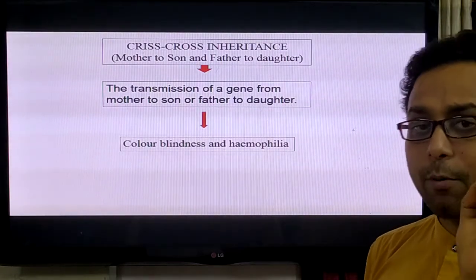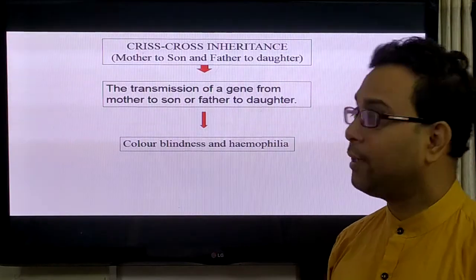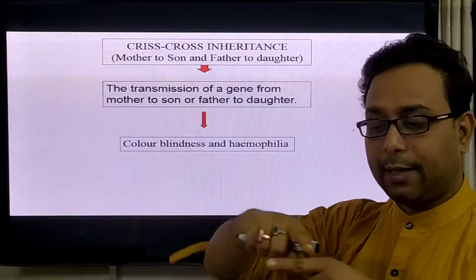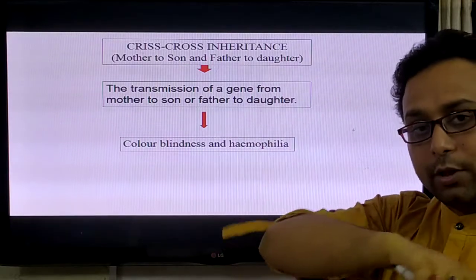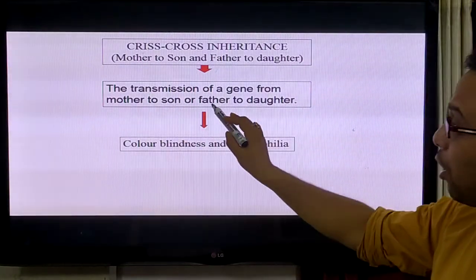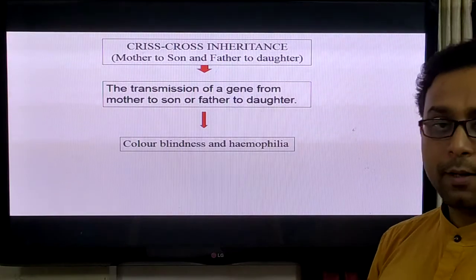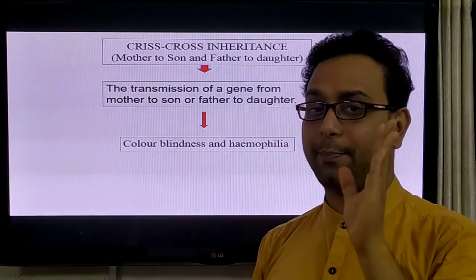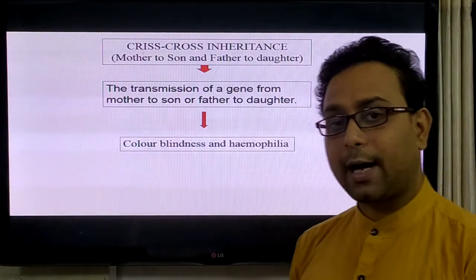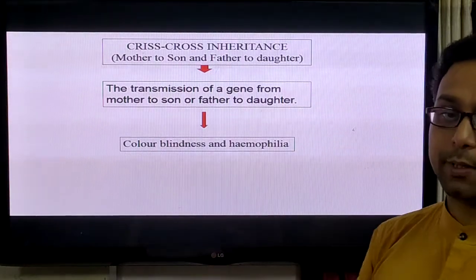Another important term: crisscross inheritance. This means the inheritance characters are transferred from mother to son and father to daughter — in the opposite sense. The transmit of a gene from mother to son or father to daughter is called crisscross inheritance. The two examples of crisscross inheritance are observed in color blindness and hemophilia.